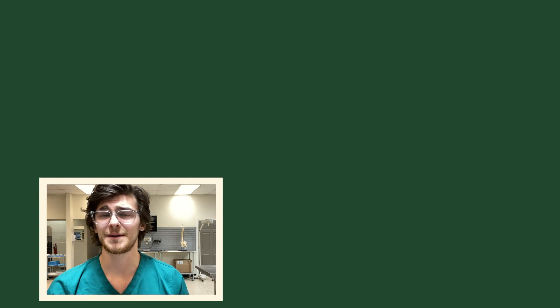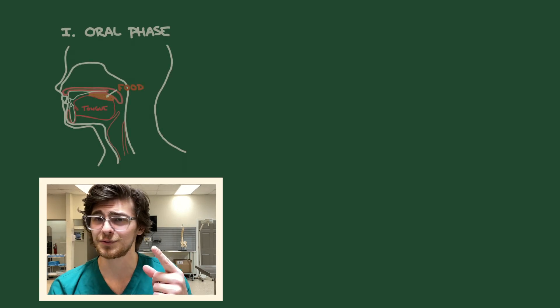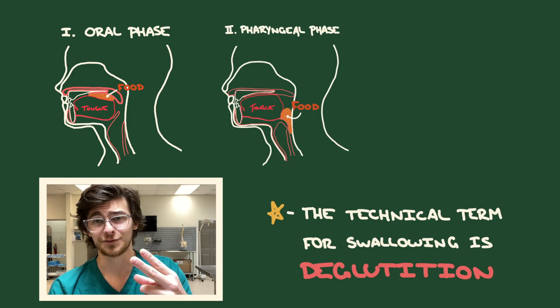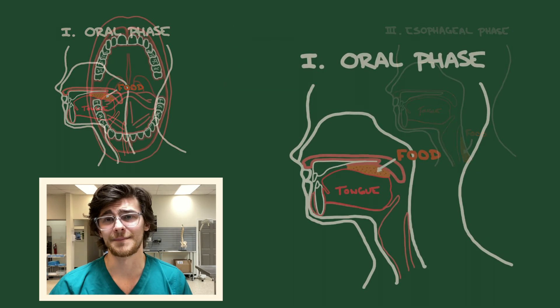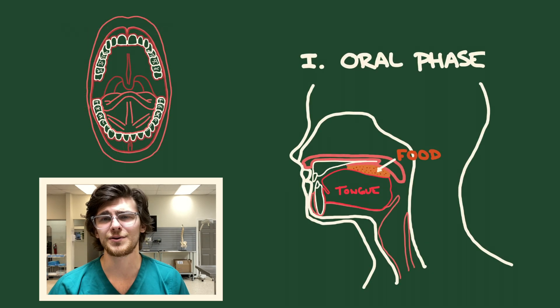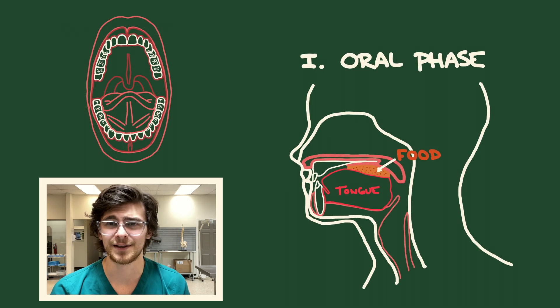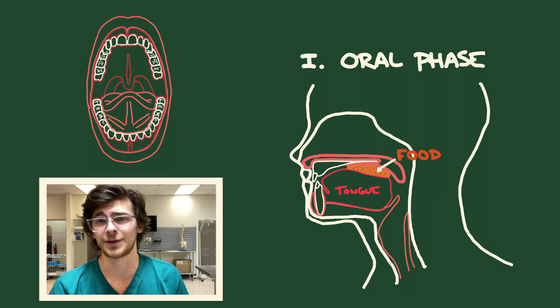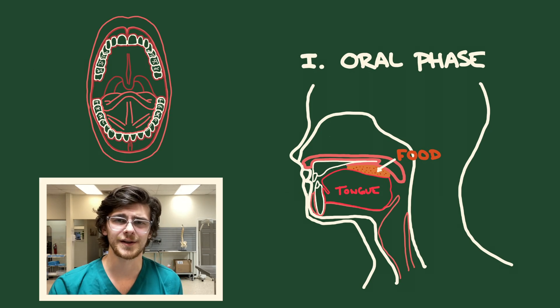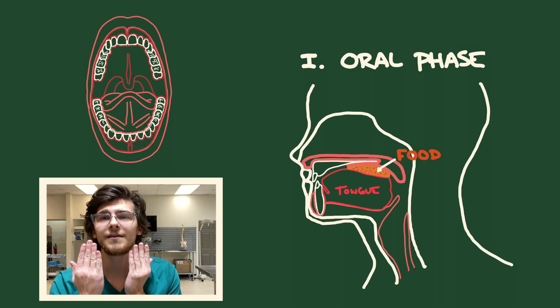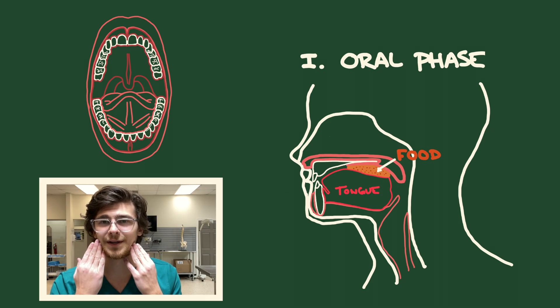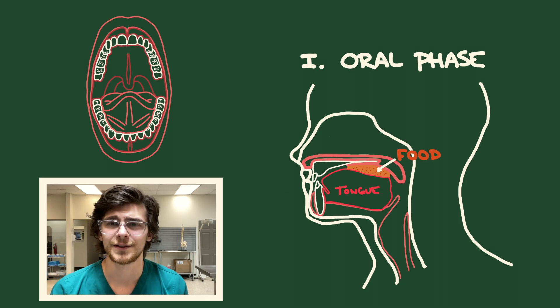Now we need to get this chewed up food into the gut somehow. This is accomplished by the swallowing reflex, which can be broken into three phases: the oral phase, the pharyngeal phase, and the esophageal phase. The oral phase involves the formation of a bolus — the clump of food we create as we chew — and is the voluntary movement of the tongue moving that bolus to the back of the oral cavity, getting it ready for swallowing.